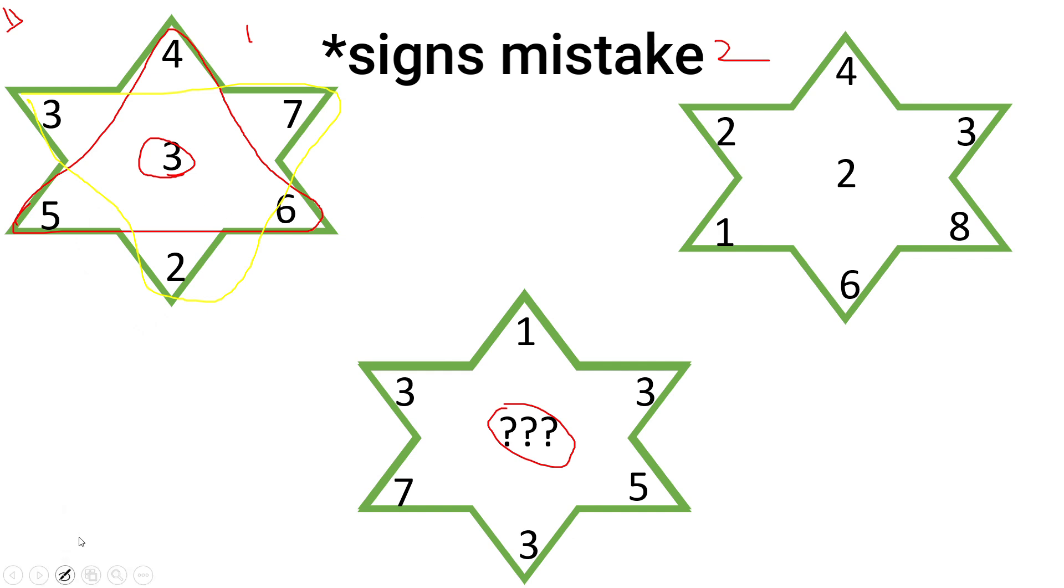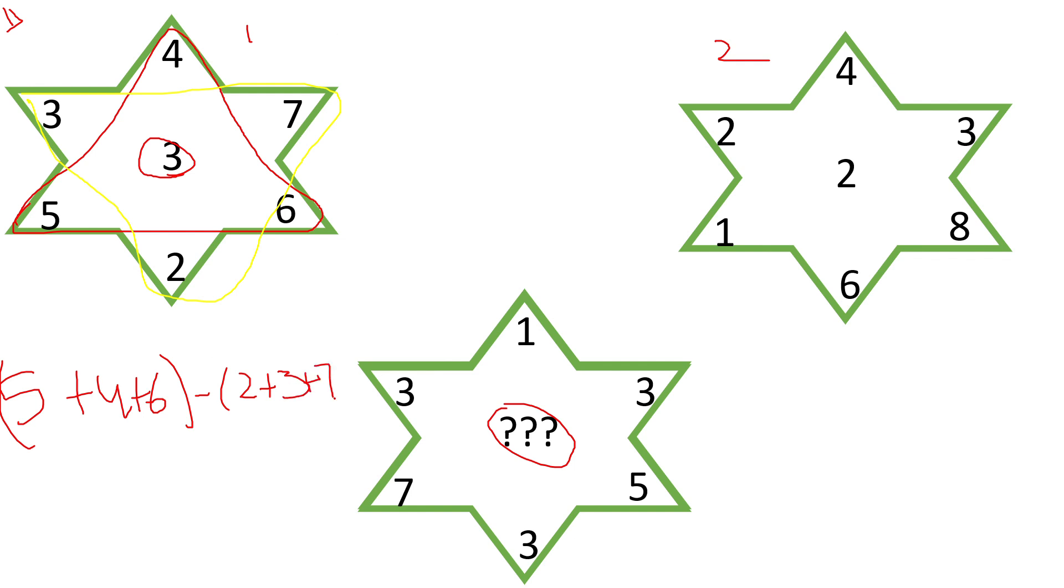Now just add the numbers in the triangle and subtract each of them. So in the red triangle the numbers are 5, 4 and 6. Then subtract them with the yellow triangle that is 2 plus 3 plus 7. So you'll get 3 as the answer.